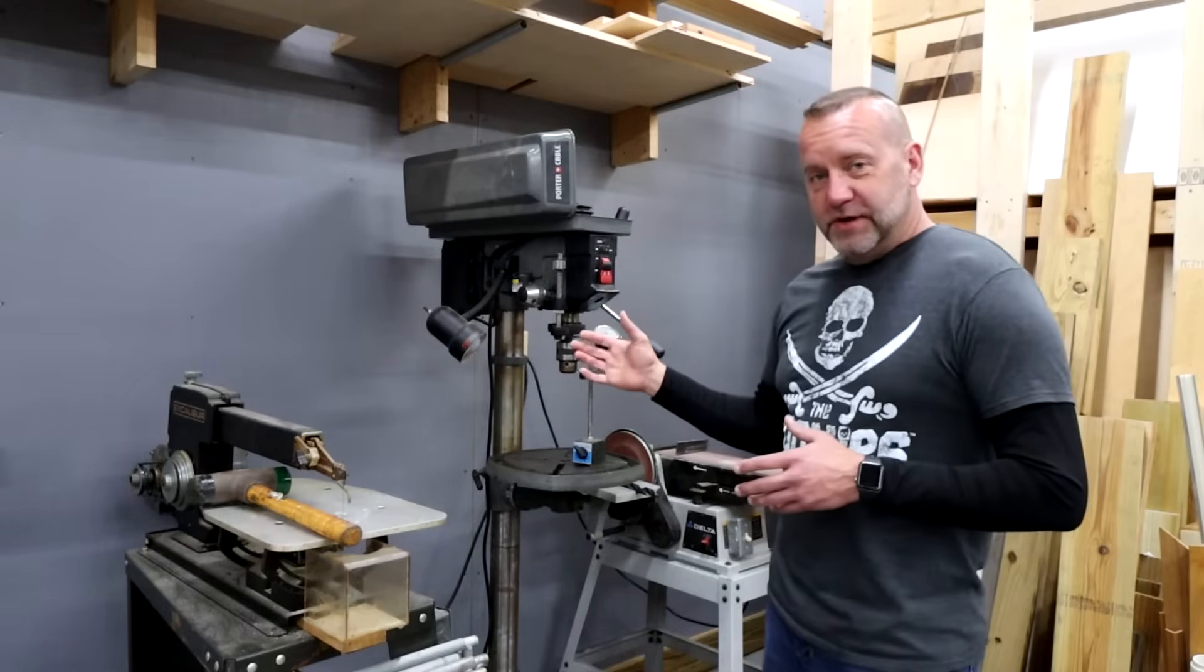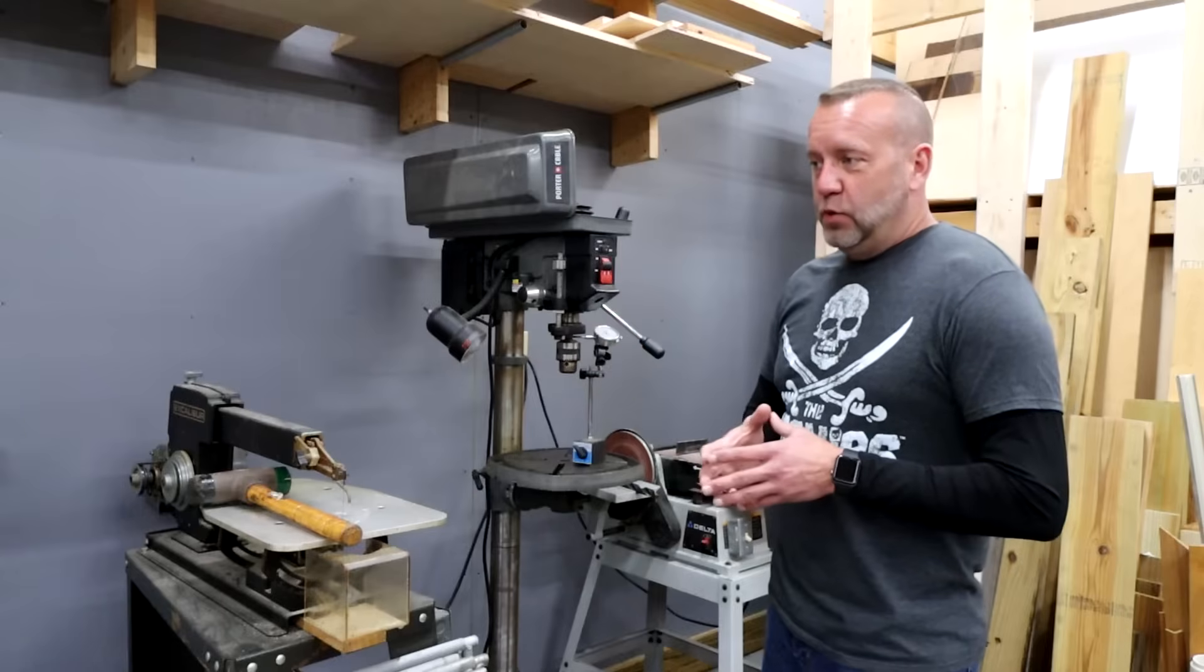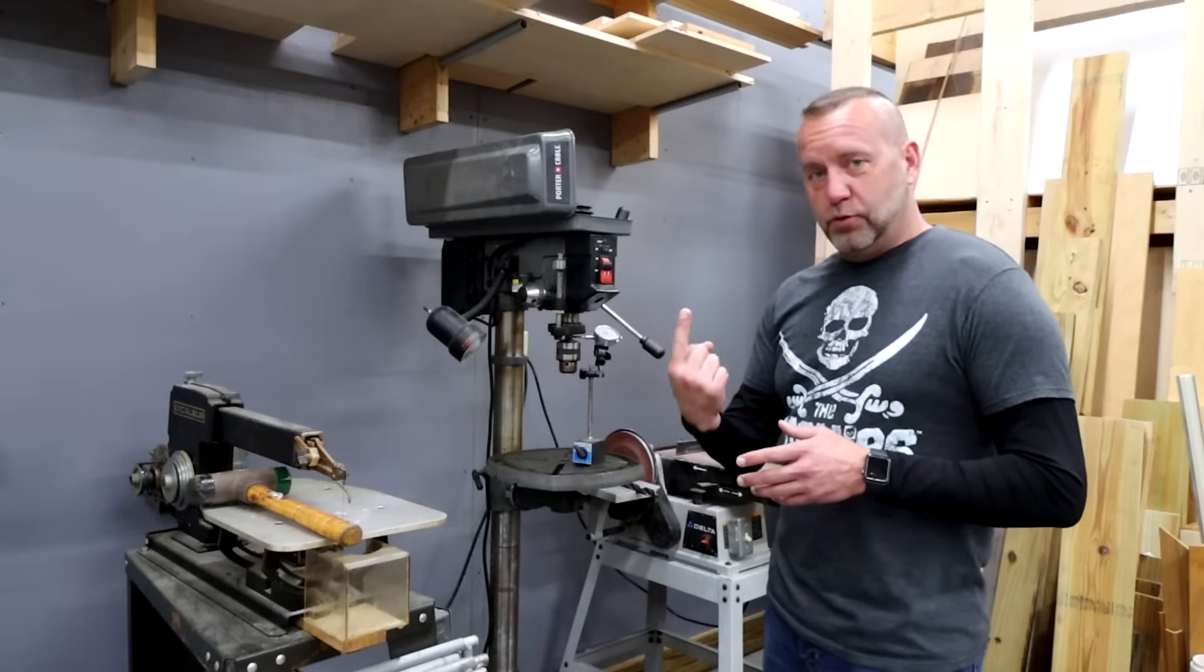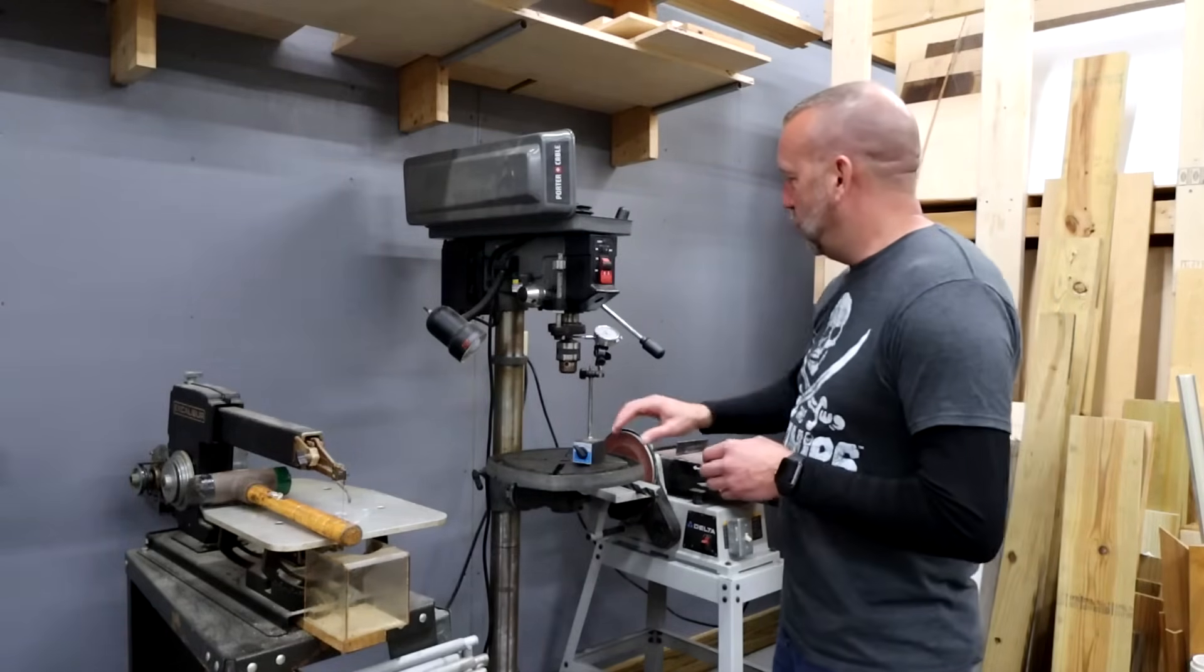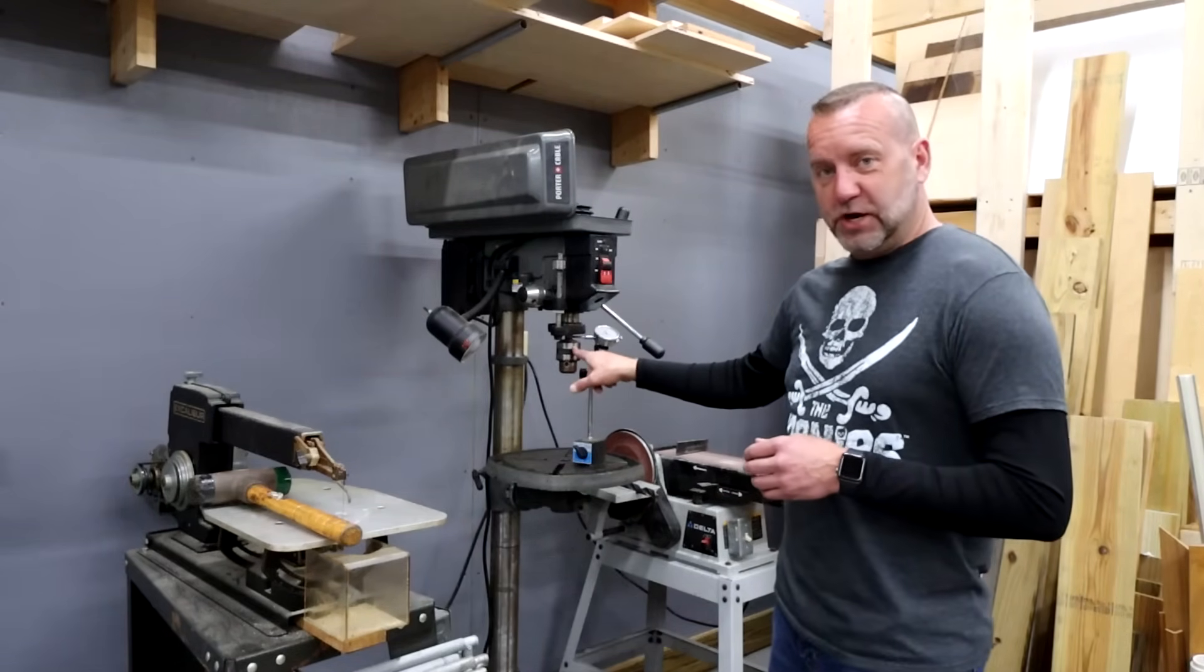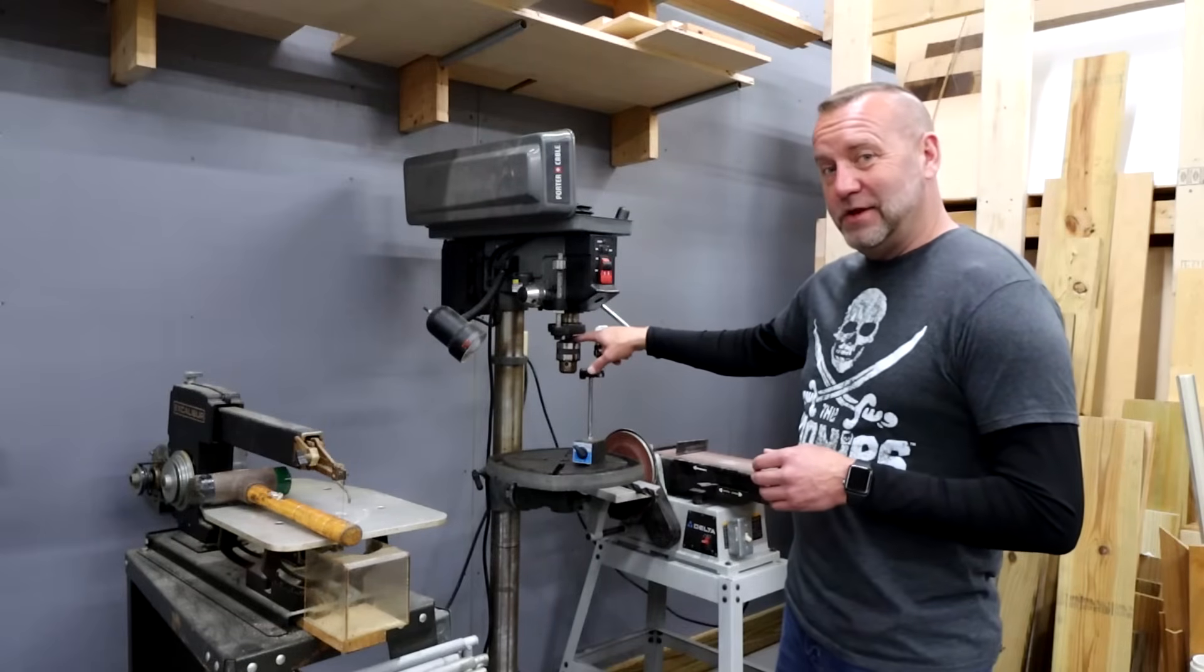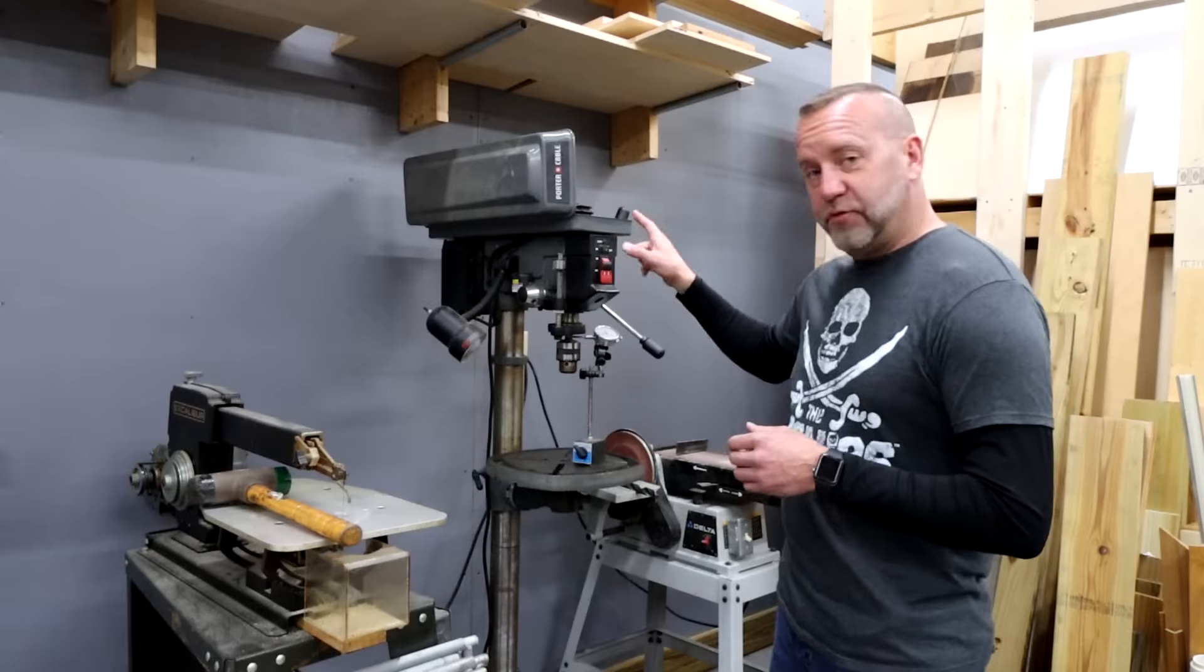So the reason we're doing this today is I do have runout in my drill press. When you chuck up a drill bit, you can actually see that drill bit wobble around a little bit. The runout could come from one of three places: Number one, it can come from the drill chuck itself. It can come from the adapter that is pressed into the chuck, or it could come from the spindle.